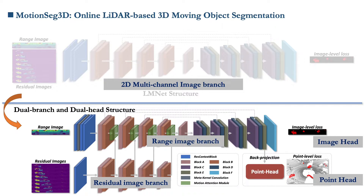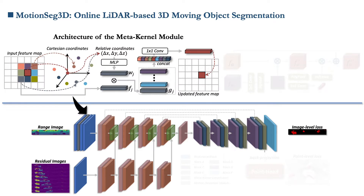The upper range image branch maintains a similar structure to SalsaNext, and uses a slightly simpler residual image branch to extract motion features. In the process of projecting a 3D point cloud to a range image, the spatial geometric information is seriously lost — that is, points that are far apart in 3D space may become adjacent pixels after projection. We use a MetaKernel module to calculate the weights of convolution kernels based on the 3D distance between points: the further the distance, the lower the weight, and vice versa. This differs from standard 2D convolution where kernel weights are consistent and shared, making more efficient use of 3D spatial information.